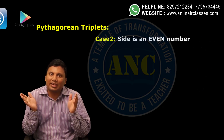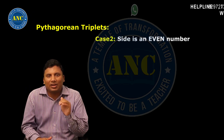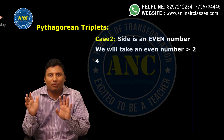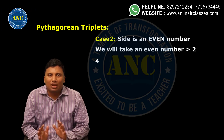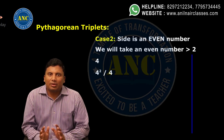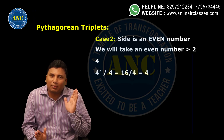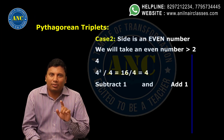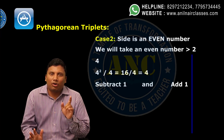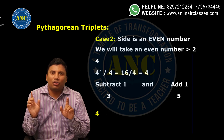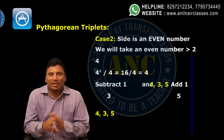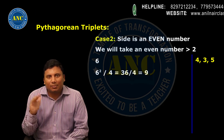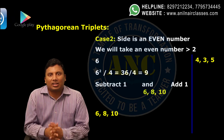Next, Case 2: we will take a case where the side is an even number greater than 2. Take 4. Square it and divide by 4: 4 squared by 4 is 16 by 4, which is 4. For an even number, we do plus or minus 1 instead of 0.5. So 4 minus 1 is 3, and 4 plus 1 is 5, giving the triplet 4, 3, 5. For 6: 6 squared divided by 4 is 36 by 4, which is 9. Subtract 1 and add 1 — giving 6, 8, 10, another Pythagorean triplet.